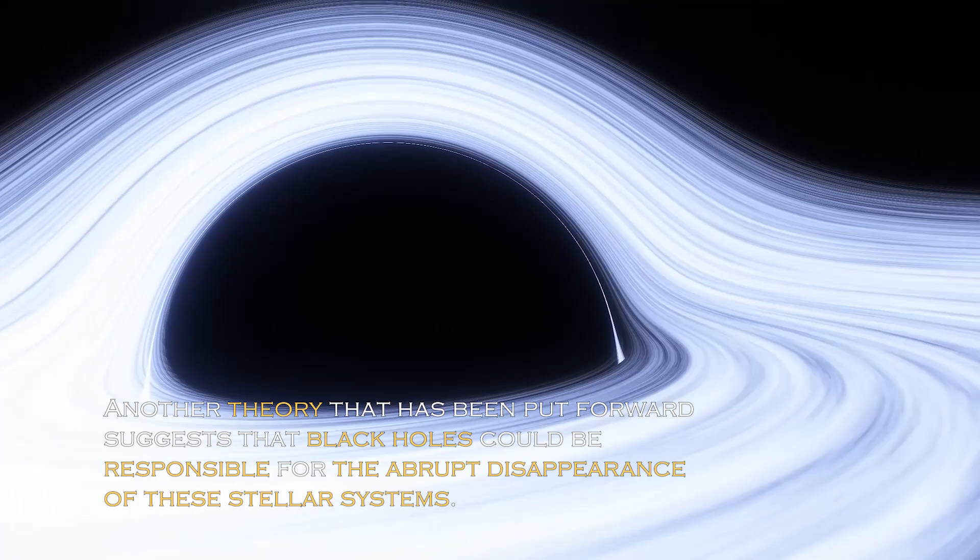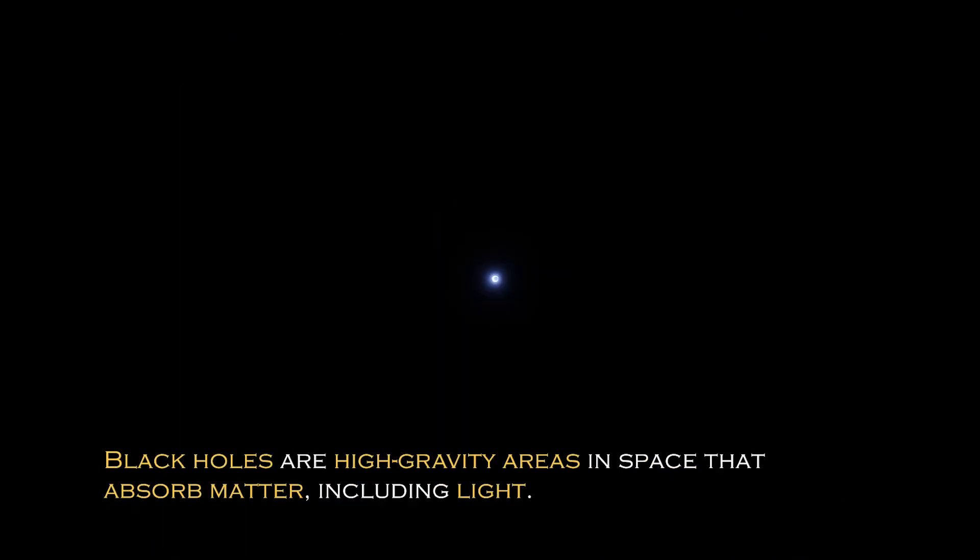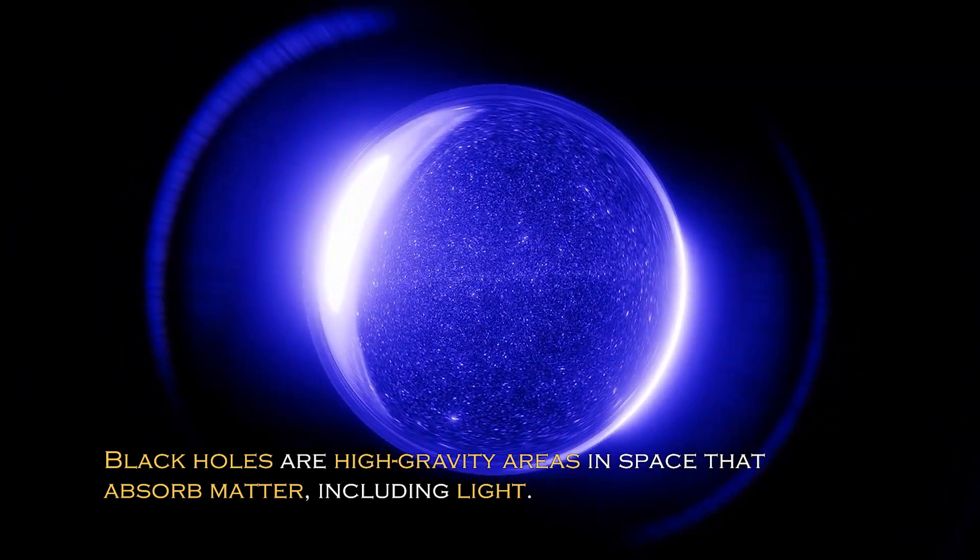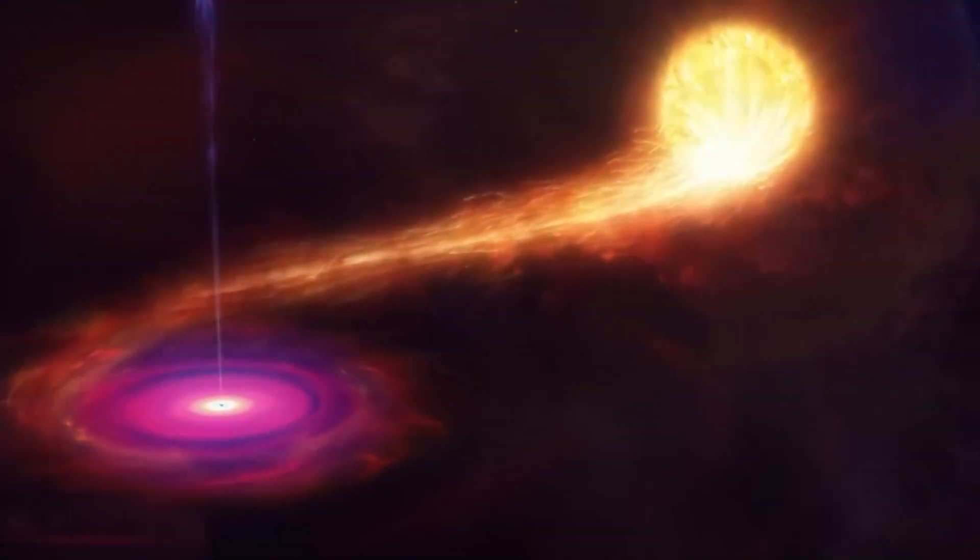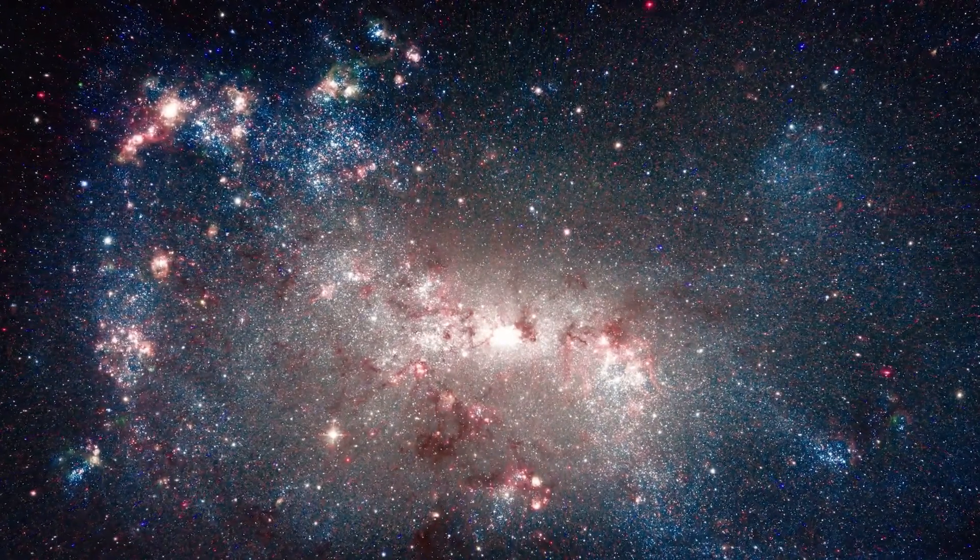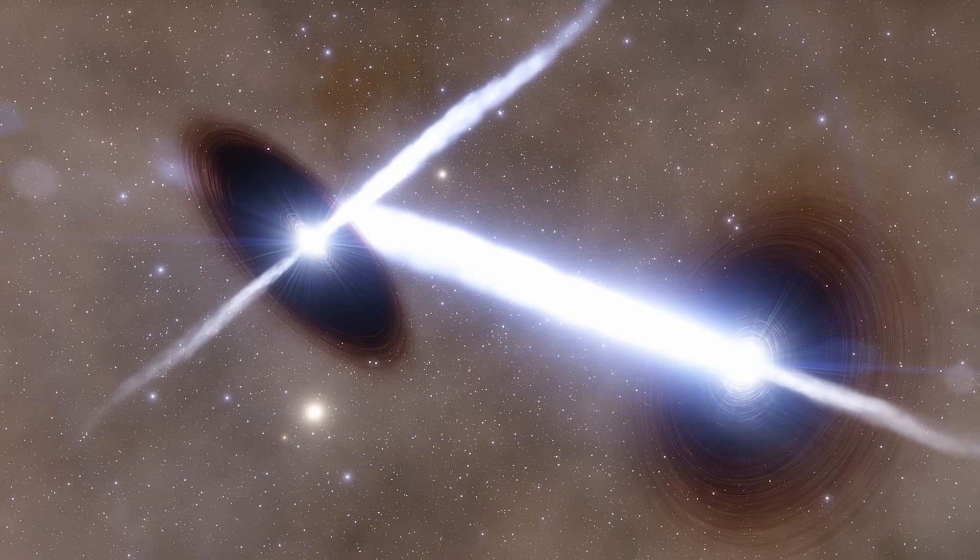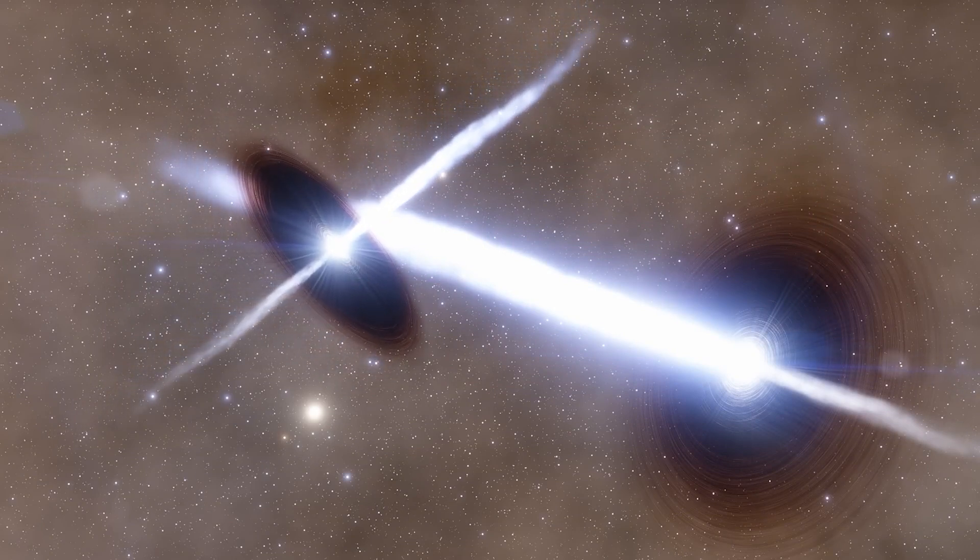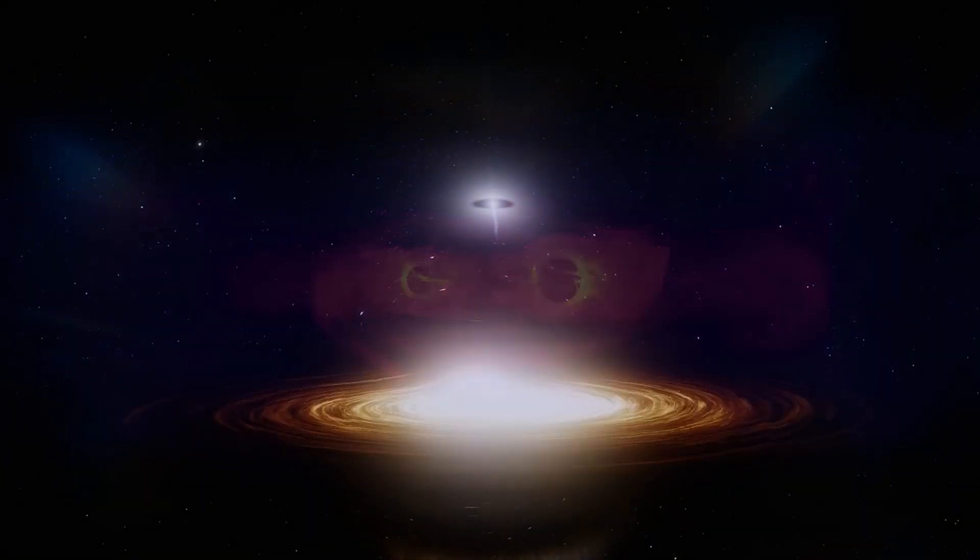Another theory that has been put forward suggests that black holes could be responsible for the abrupt disappearance of these stellar systems. Black holes are high-gravity areas in space that absorb matter, including light, and sometimes consume entire stars. However, the theory of black holes as the cause of the massive disappearance of trillions of stars seems unlikely. It would require an excessive number of black holes to eliminate such a huge number of stars, which does not seem logical or consistent with what we know about these astronomical phenomena.